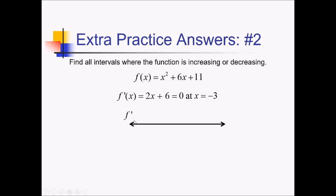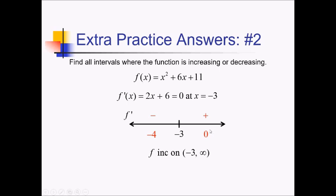Let me set up an f prime number line with negative 3 as a critical value. Testing something to the left of negative 3 — how about negative 4? 2 times negative 4 plus 6 comes out negative. And something to the right of negative 3 — let's test 0 — that's going to be 6 if I plug it into f prime, giving me a positive. Since f prime is positive over here, f is increasing from negative 3 to positive infinity. Since f prime is negative over here, f is decreasing from negative infinity to negative 3.